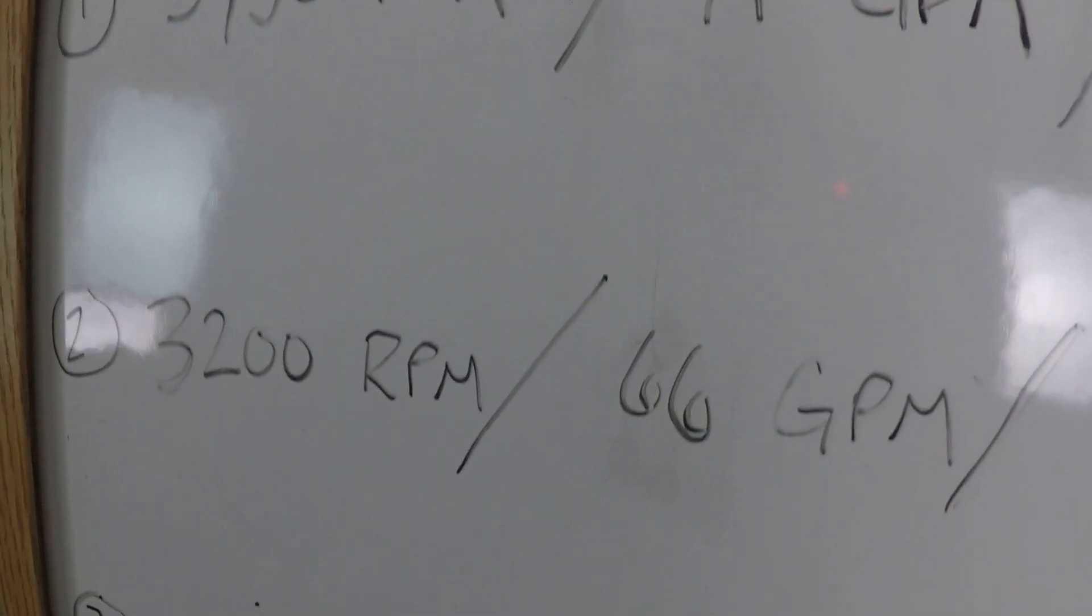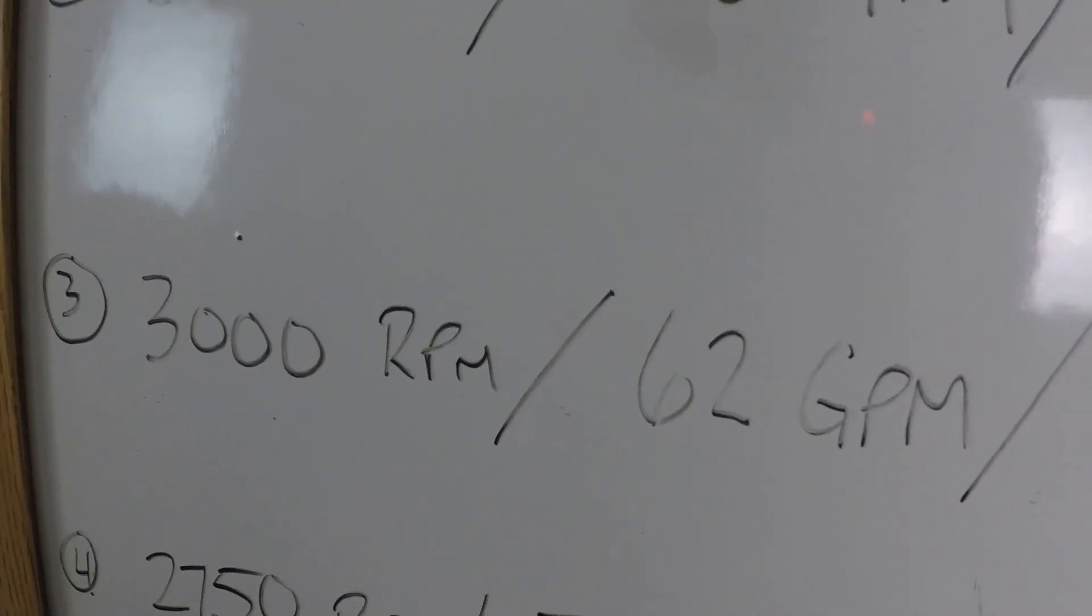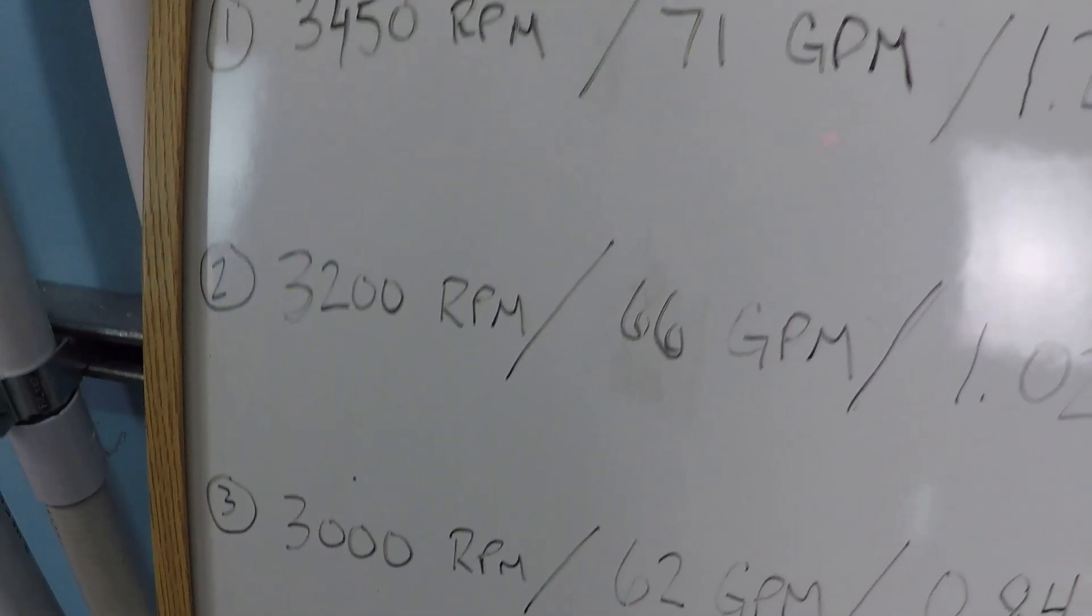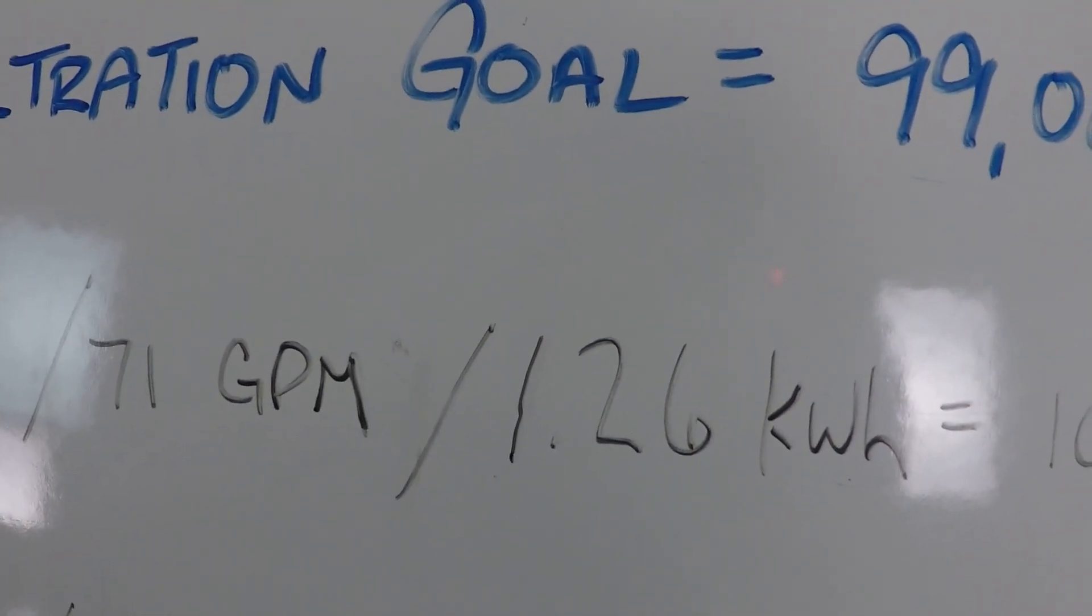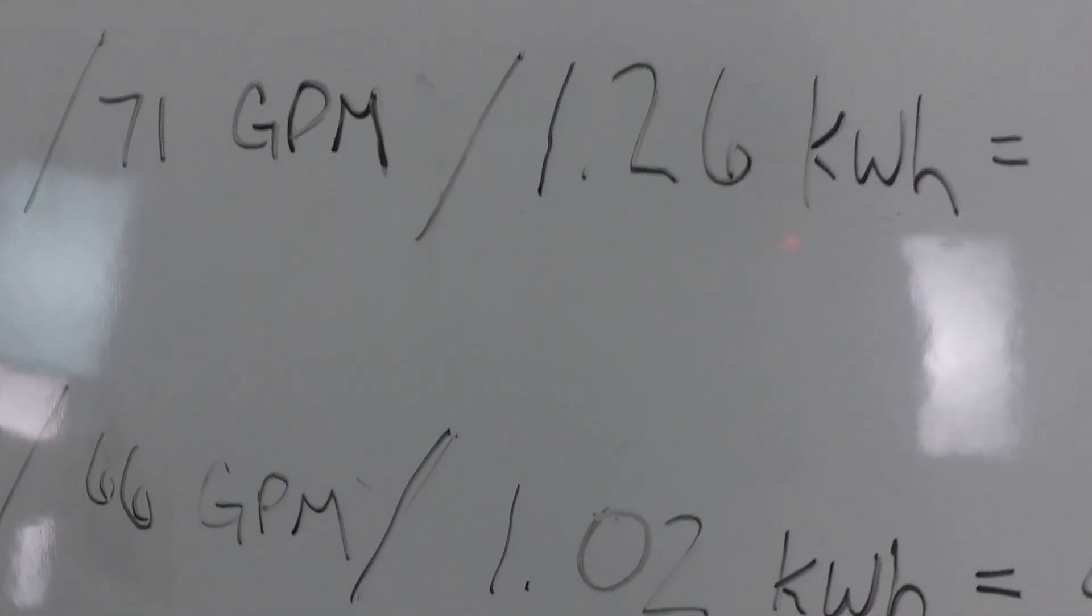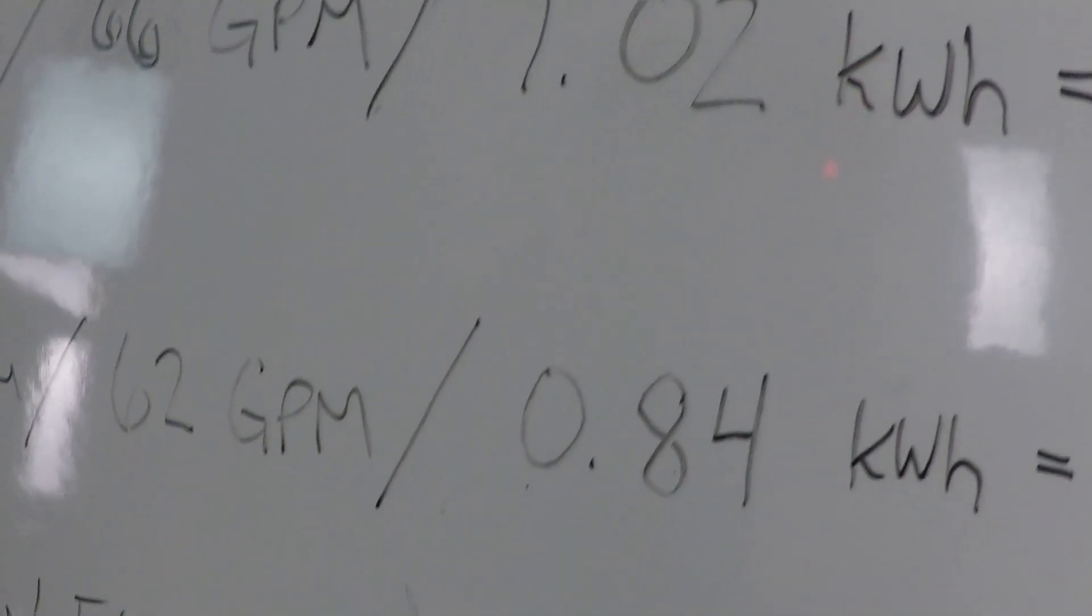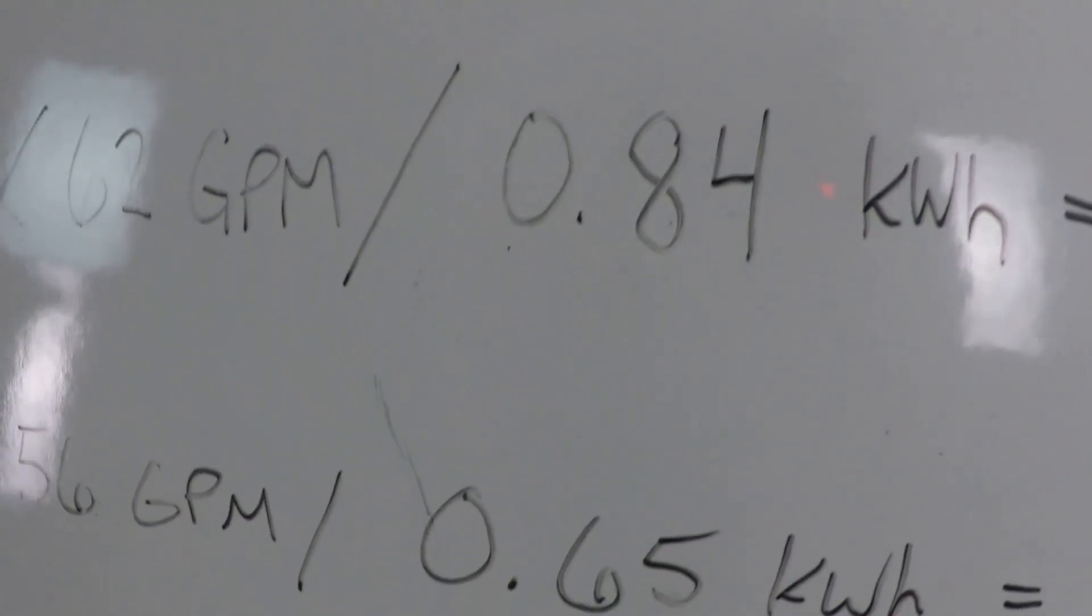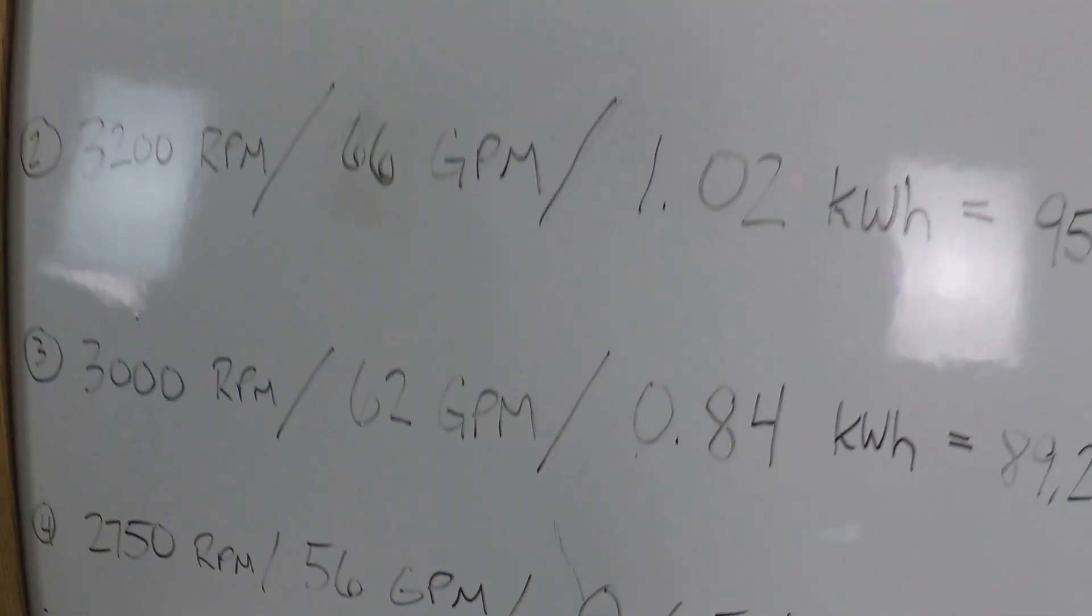71 gallons per minute, 66 gallons per minute, 62 gallons per minute. But the power consumption drops much more aggressively. 1.26 kilowatts per hour, 1.02, 0.84, and 0.65.